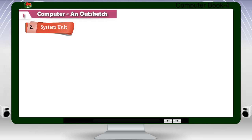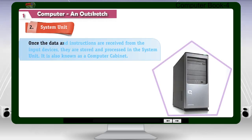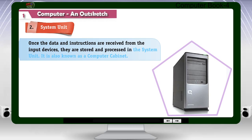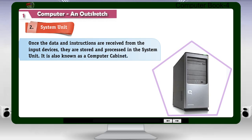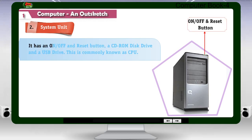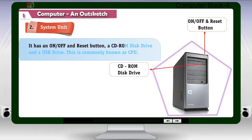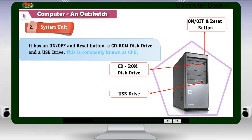System Unit: Once the data and instructions are received from the input devices, they are stored and processed in the system unit. It is also known as a computer cabinet. It has an on/off and reset button, a CD-ROM disk drive, and a USB drive. This is commonly known as CPU.